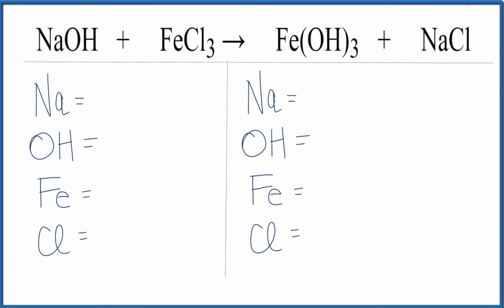In this equation, we have sodium hydroxide and iron 3 chloride. It's a double displacement reaction. This Fe and the Na, they change places. So we end up with Fe(OH)3. And then the Na now is with the Cl. We have NaCl.